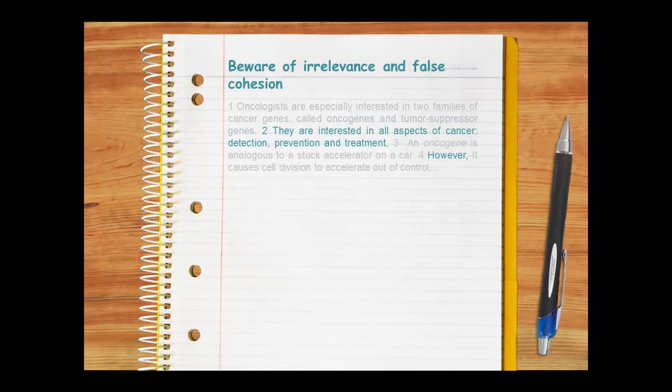There are two things, however, that can disrupt cohesion. Imagine, for example, if the writer included this extra sentence and this extra connective in the paragraph we've just looked at. The extra sentence contains information that detracts from the writer's main point. In the context of this paragraph, the sentence is irrelevant. In addition, the use of the connective, however, is confusing and makes no logical sense. It's an example of false cohesion, or trying to make ideas seem cohesive when they're not.